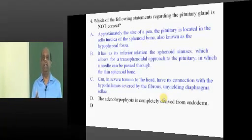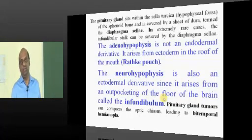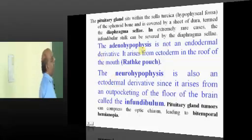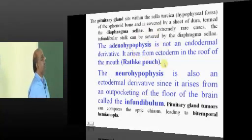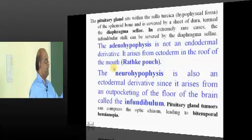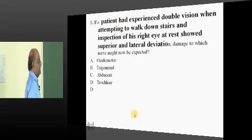How is pituitary derived? The glandular part which is adenohypophysis, it is not an ectodermal derivative, it is not an endodermal derivative. It is derived from the ectoderm in the roof of the mouth which is called Rathke's pouch is the point of the origin.